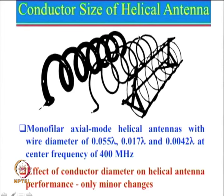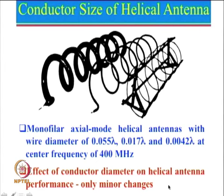However, the large-diameter wire has one significant advantage: it can handle very large power. A small wire diameter has relatively large resistance, so I²R losses are large, whereas a large diameter wire has small resistance and smaller losses — so for very high power applications one can use the larger diameter. But whether you take this diameter, or this, or this, there is very minor change in the performance of the axial mode helical antenna: radiation pattern does not vary much, gain does not vary much, and even bandwidth does not vary much.